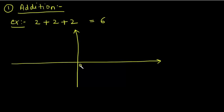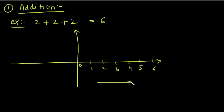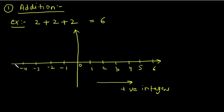So this is our number line. We have 0 here. Then we have 1, 2, 3, 4, 5, 6. So on one side we have positive integers, and on the other side we have negative integers.